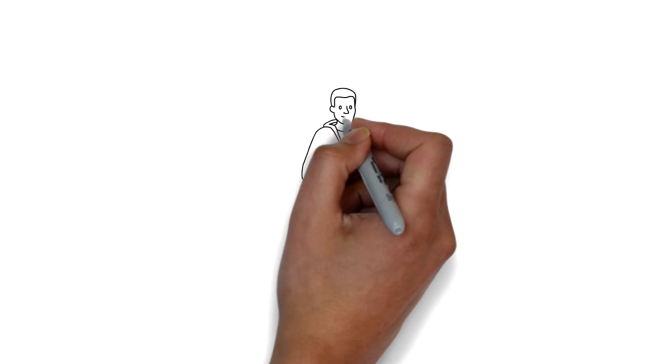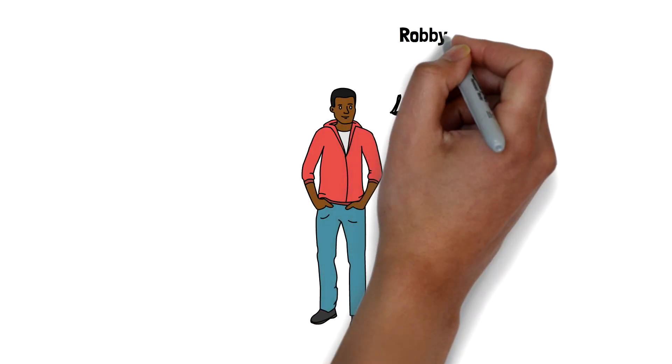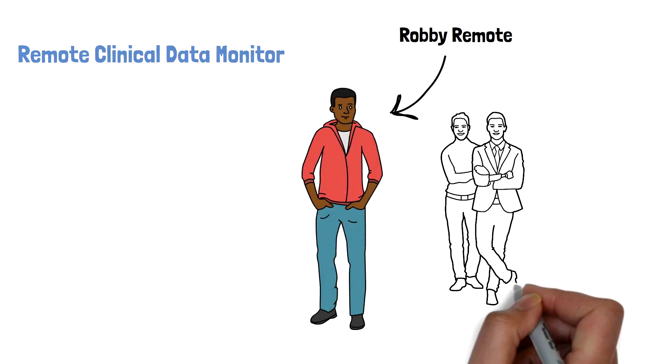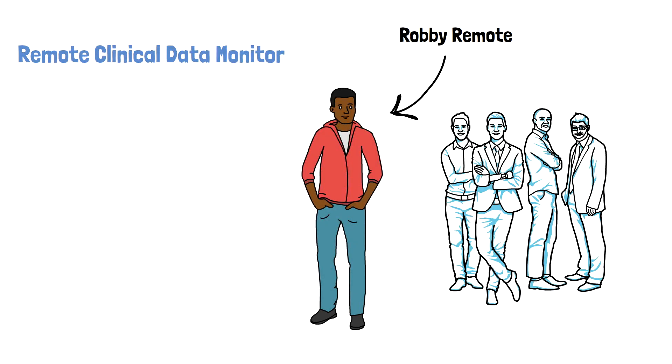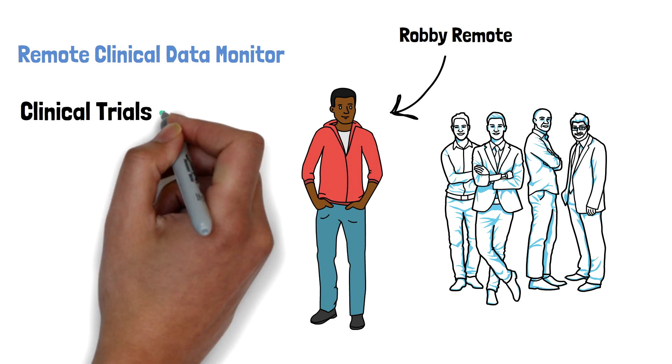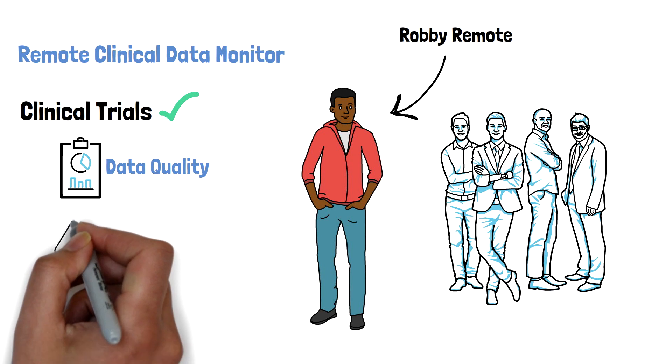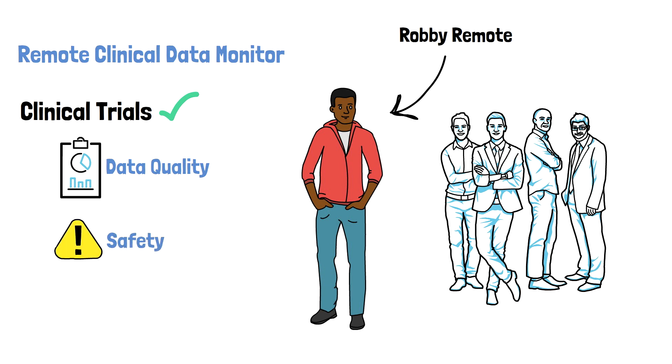Hello, this is Robby Remote. Robby is a remote clinical data monitor. He's part of a team that plays a major role in ensuring that clinical trials are running as they should by maintaining a high level of data quality and ensuring safety of the participants involved.